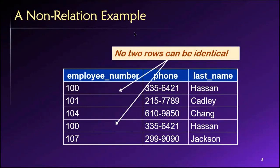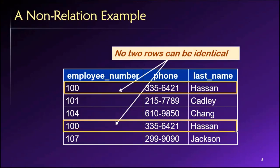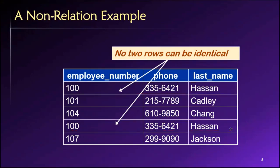Here's another one. In this case we have identical rows. So this table cannot qualify as a relation as well. So here you can see in this row we have employee number 100, phone number 3356421, last name Hassan. And we have exactly that same combination of values here. So these two rows are identical, which means we have no way of telling them apart. There's nothing about one of them that is different from the other. So if we have a table like this that can hold identical rows, then it is not a relation. It's just a table.